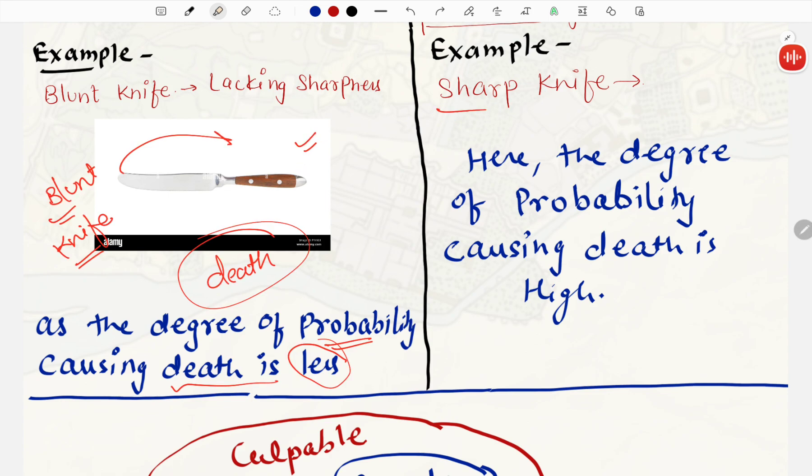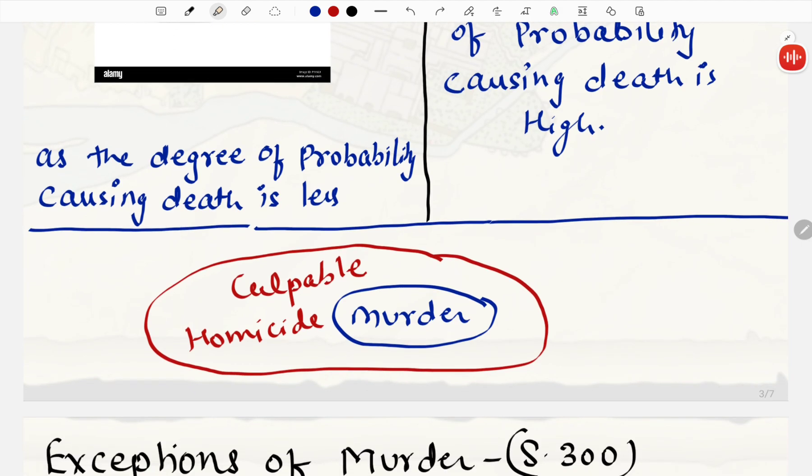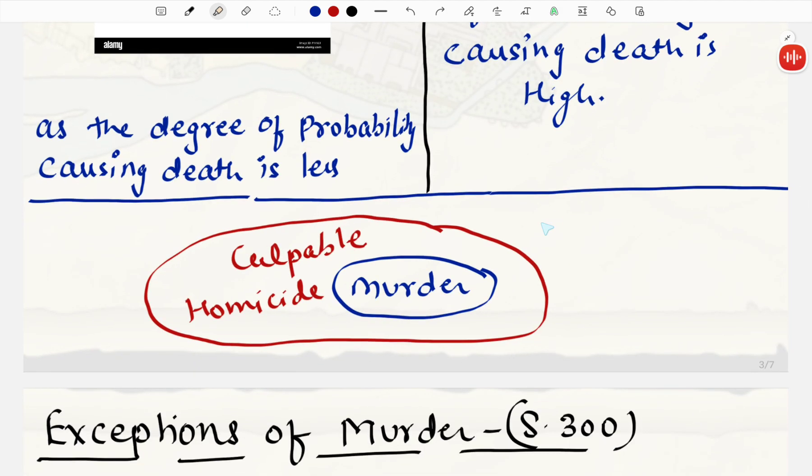And here murder ke andar kya aata hai? Ki jab knife jo aap select kar raha hai, blunt knife leke na leke, sharp knife liya hai, jo butcher house me use kiya jata hai. Ek hi baar me maare hai, cut jay hai. In murder, here the degree of probability of causing death is high. Kyun ki aapko pata hai, ki ye ekdum sharp knife hai, isse attack karenge, to ye to finish hai. This comes under murder. Basically difference kahan aya? The degree of intention. Degree of intention pe depend karta hai, whether the act comes under culpable homicide or murder.